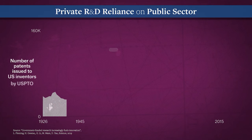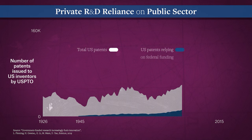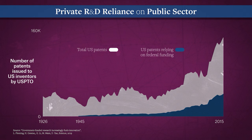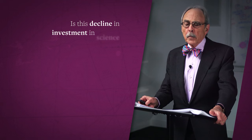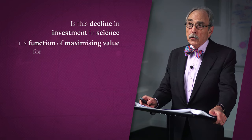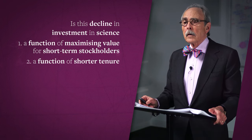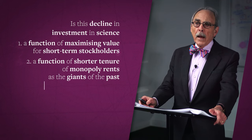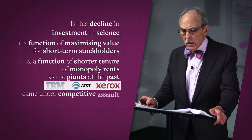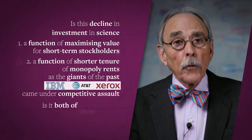The real-world interdependence of public and private investment in R&D demonstrates the relevance of Nelson's and Arrow's work. Patents that cite public funding have increased monotonically since World War II, especially patents awarded to corporations, even as corporate willingness to invest in upstream science has declined. Is this decline a function of maximizing value for short-term stockholders? Is it due to shorter tenure of monopoly rents as giants like IBM, AT&T, and Xerox came under competitive assault? Or both?